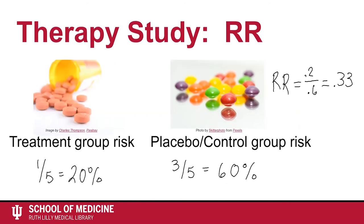If we find that the risk of the disease with treatment is 1 in 5, or 20%, and the risk of the disease without treatment is 3 in 5, or 60%, the relative risk — the two risks compared — is .2 over .6, which equals .33. This means that the treatment group is .33 times more likely to get the disease than the placebo group.